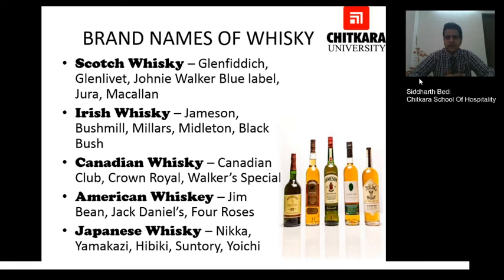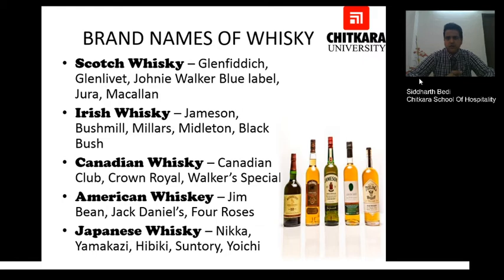Various brand names by category: for Scotch we have Glenfiddich, Glenlivet, Johnnie Walker Blue Label, Jura and Mattel. For Irish whisky we have Jameson, Bushmills and Midleton. For Canadian whisky we have Canadian Club, Crown Royal and Walker's Special. For American whisky we have Jim Beam, Jack Daniel's and Four Roses. For Japanese whisky we have Nikka, Yamazaki, Hibiki and Yoshi, which are famous brands from Japan.